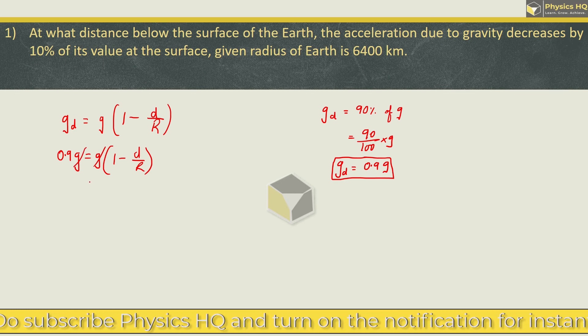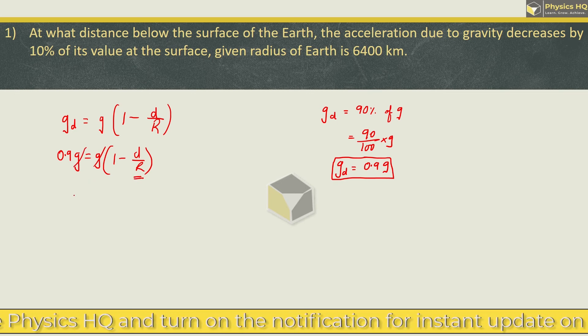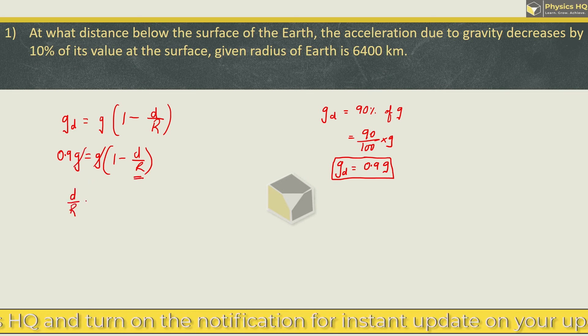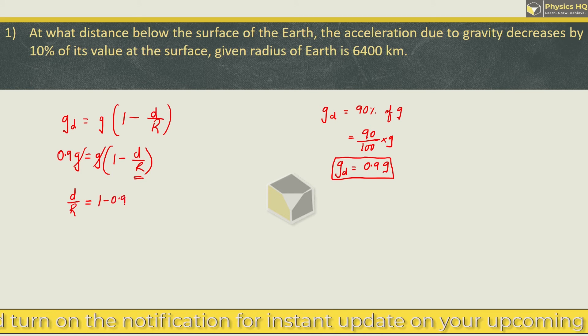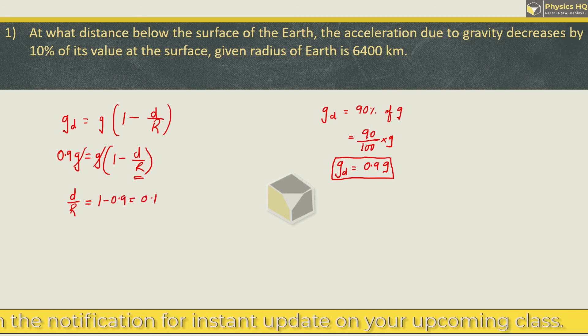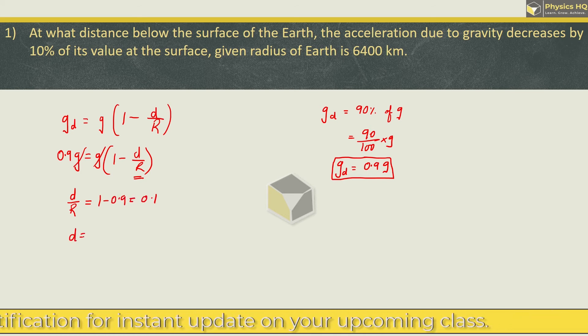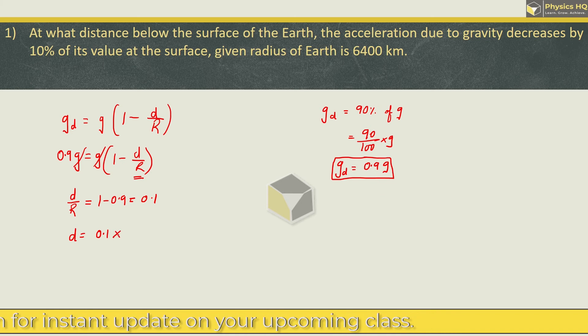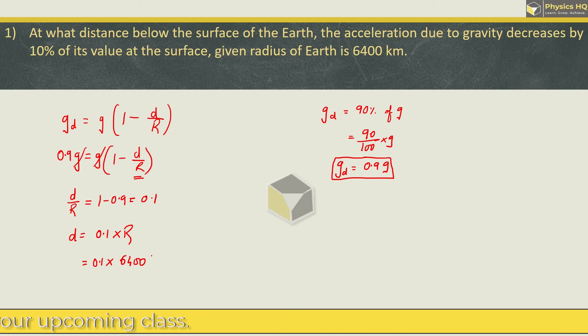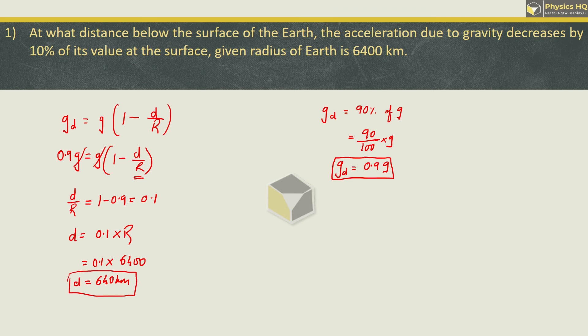We cancel both the G. If we take D by R, 0.9 is equal to 1 minus D by R, so D by R is equal to 0.1. So we can say that D is equal to 0.1 times the radius of the Earth. 0.1 into 6400 km gives us 640 km. So we have the depth here. Hope you all understood this.